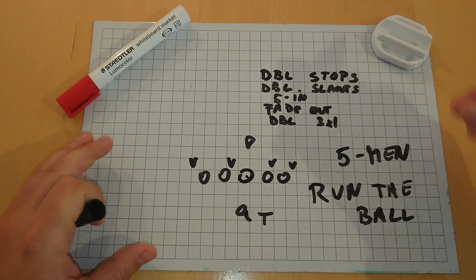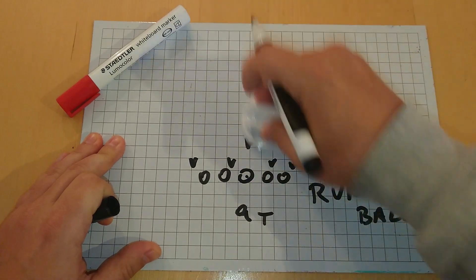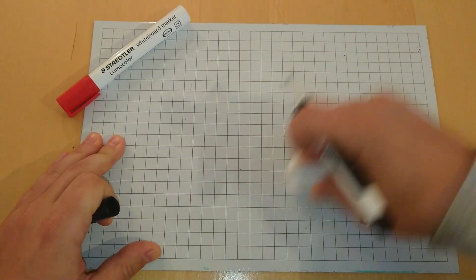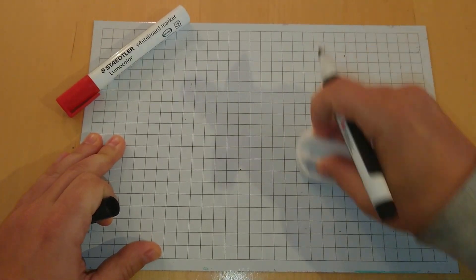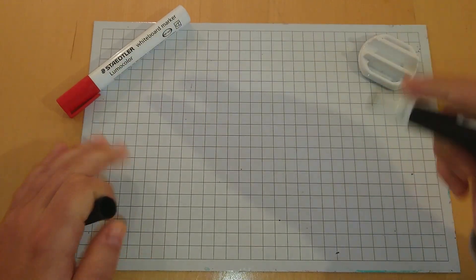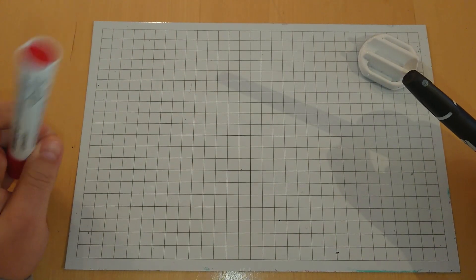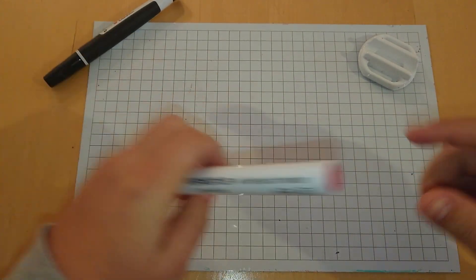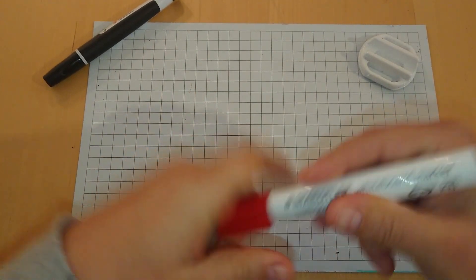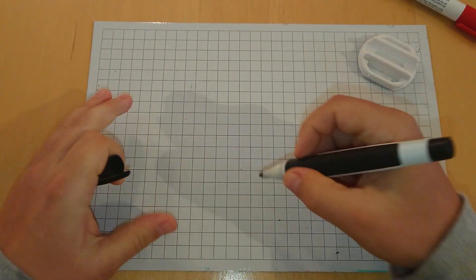We assume that the box is loaded with at least one more defender that we can block, and this is not counting the quarterback as a runner. So let's have a look at double stops.